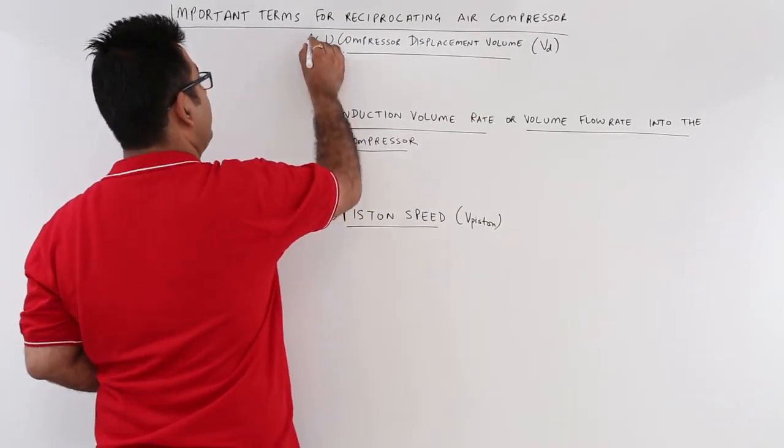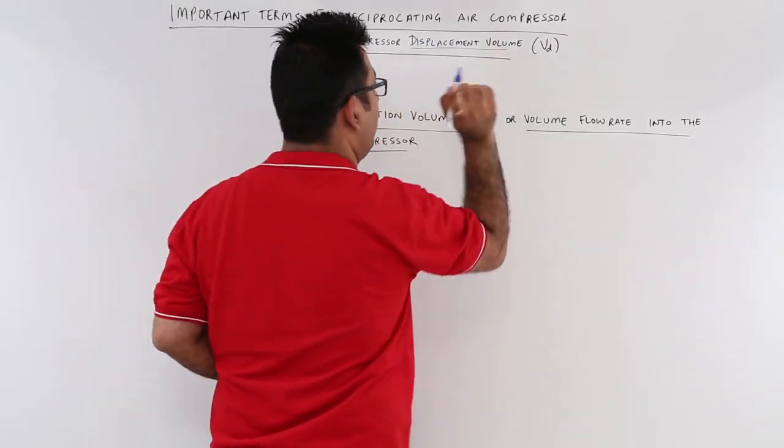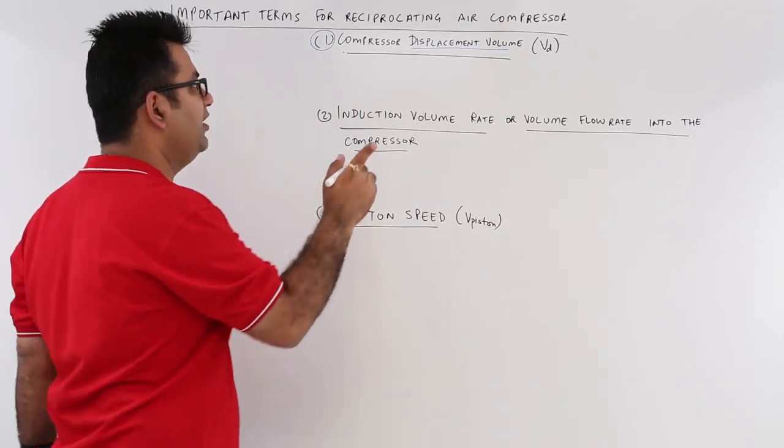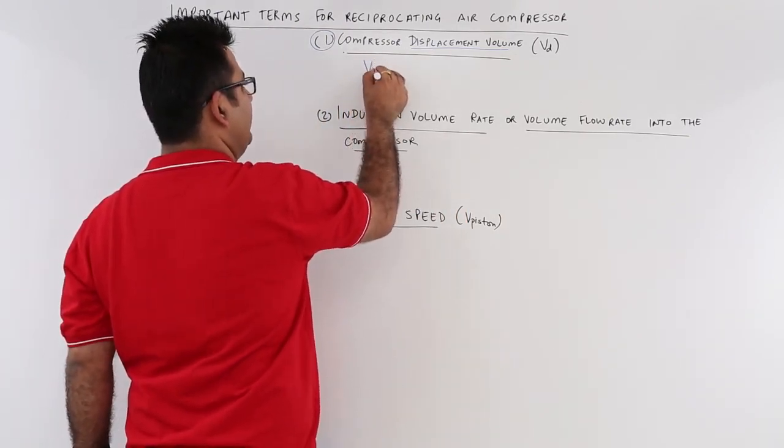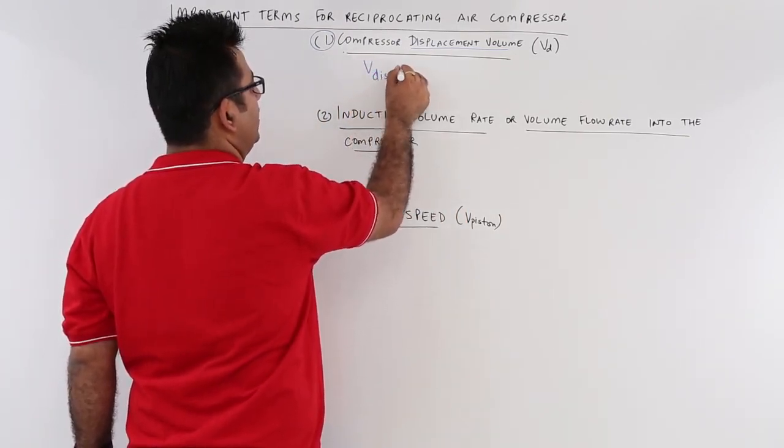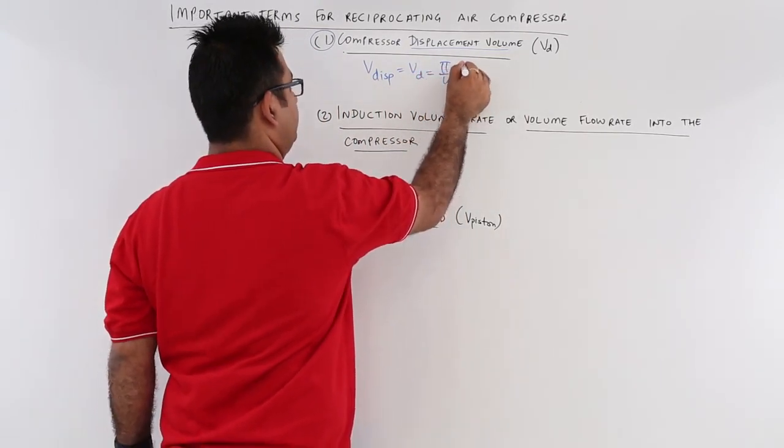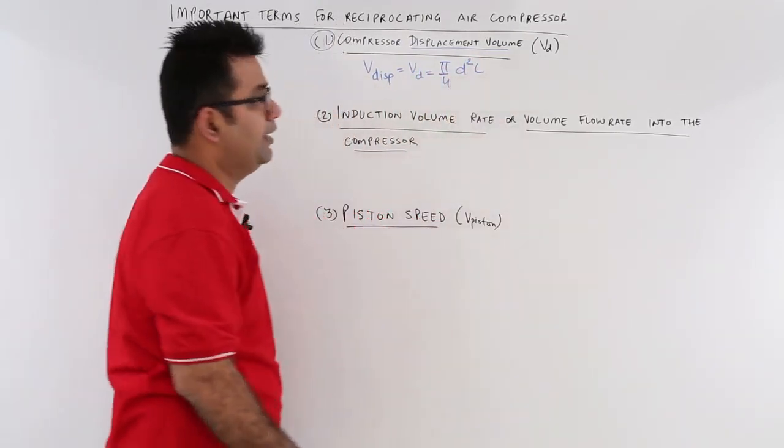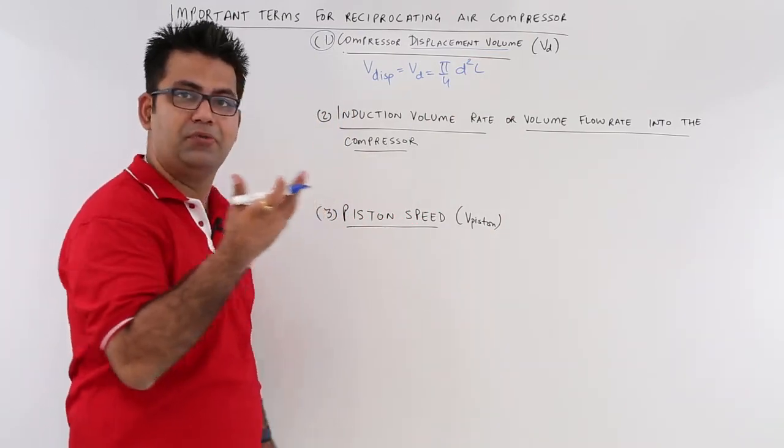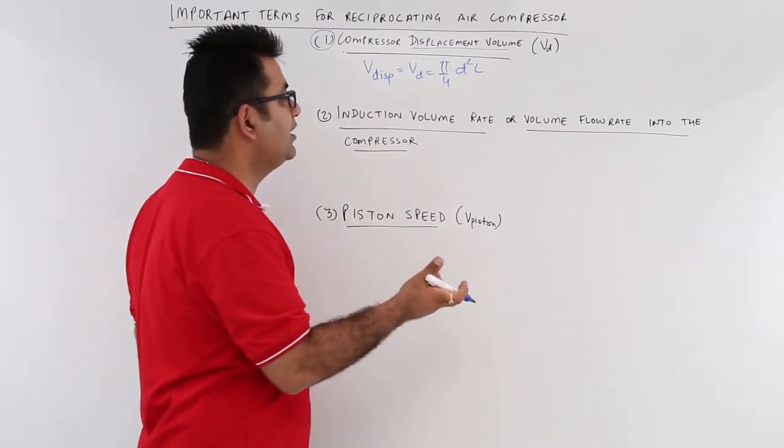The first one is the compressor displacement volume, and it's a very simple formula: V_d or V_D equals π/4 d² × l, where d is the bore of the cylinder of the compressor and l is the length of stroke.